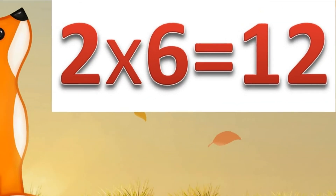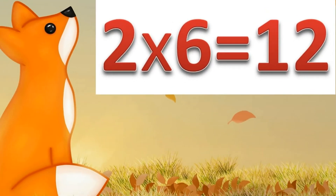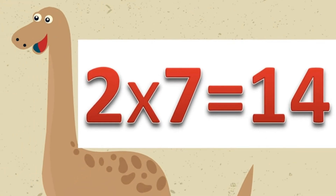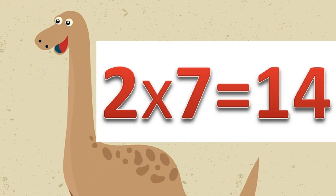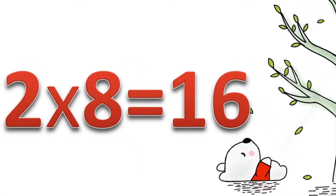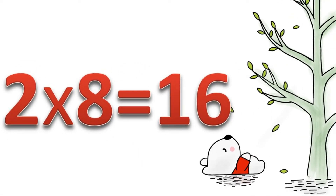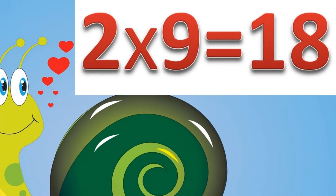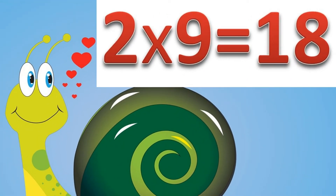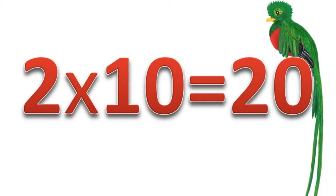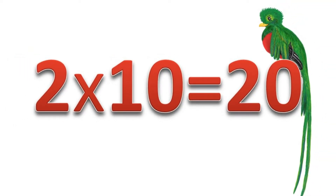Two times six: twelve. Two times seven: fourteen. Two times eight: sixteen. Two times nine: eighteen. Two times ten: twenty.